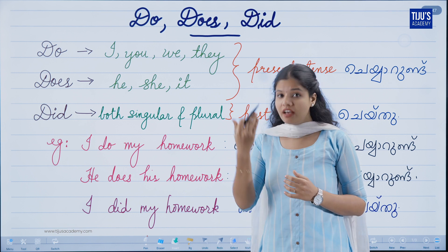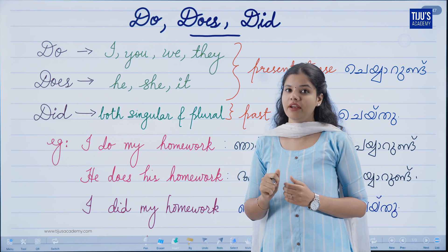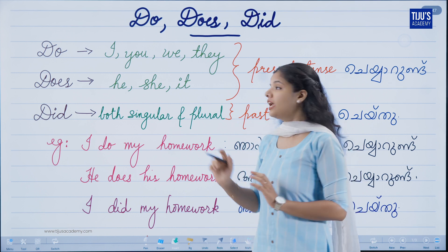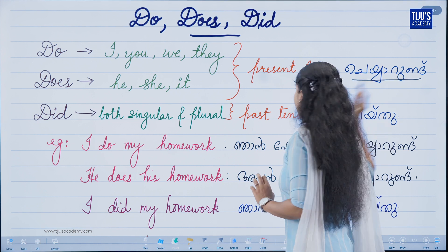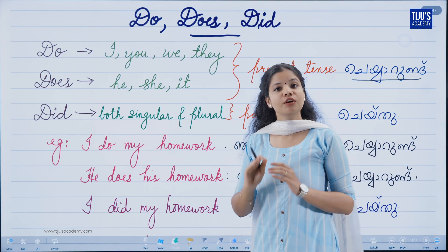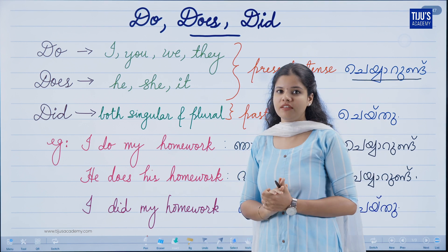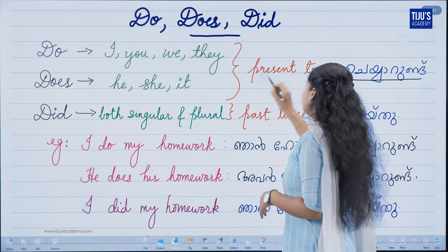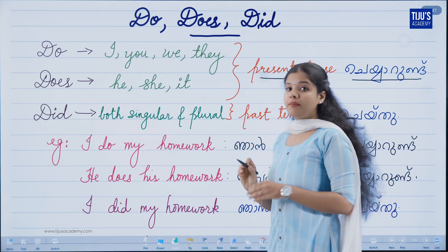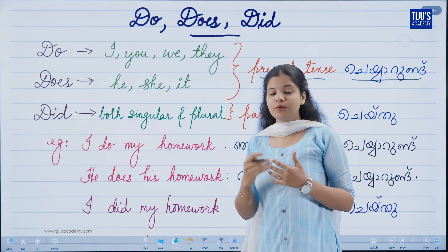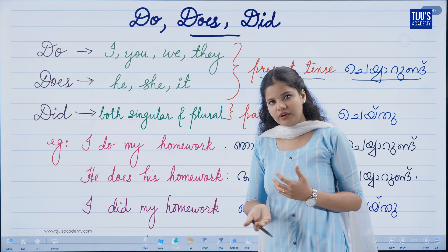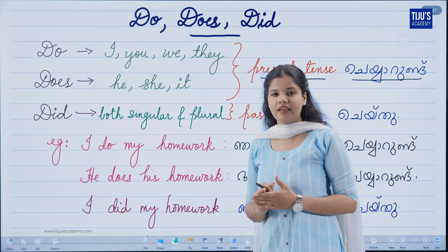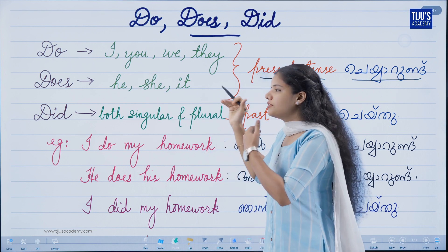One thing we have to say is: do doesn't use does all the time. We have a present tense. What does it convey? Do and does are used in the present tense. What is the basic difference?